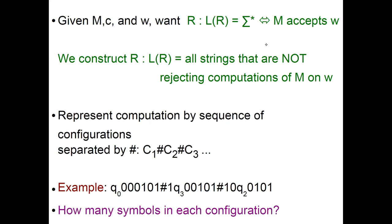Given M, C, and W, we want to construct an expression R whose language is sigma star if and only if M accepts W. Just like before, we're going to construct R whose language is the set of all strings which are not rejecting computations of M on W, and represent computation by a sequence of configurations separated by pound: C1 pound C2 pound C3 and so on.